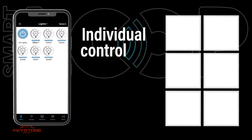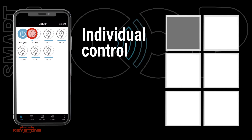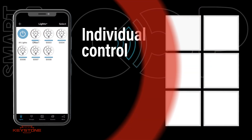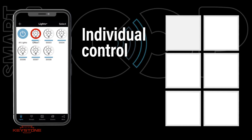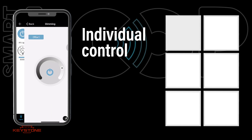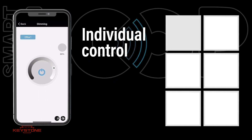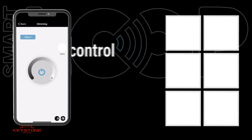There are two methods to control individual lights on the lights page. Press a light icon and immediately slide left or right to adjust the light level. Alternatively, press and hold the light icon to open the dimming page, where you can use the wheel to set your desired light level.